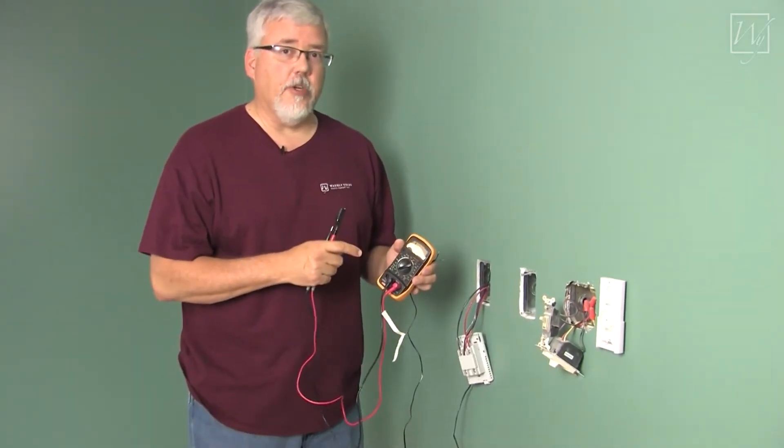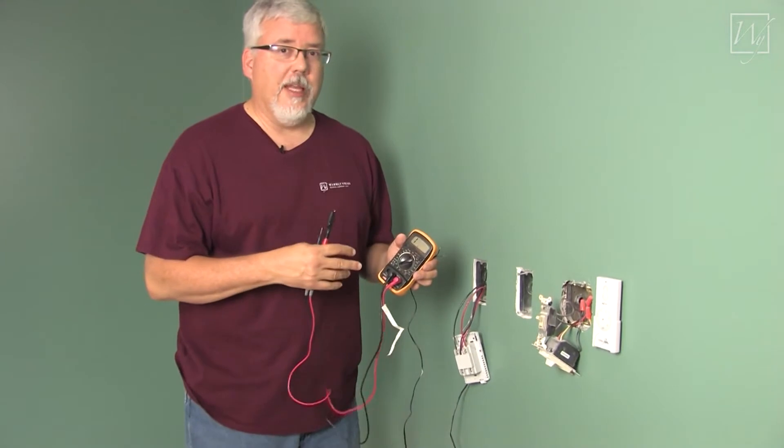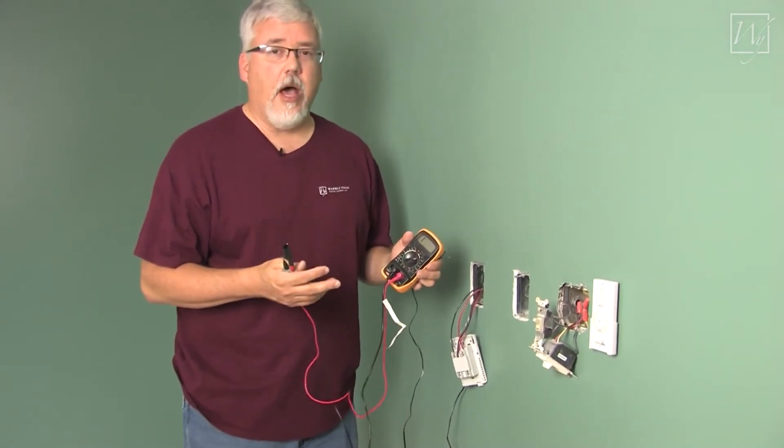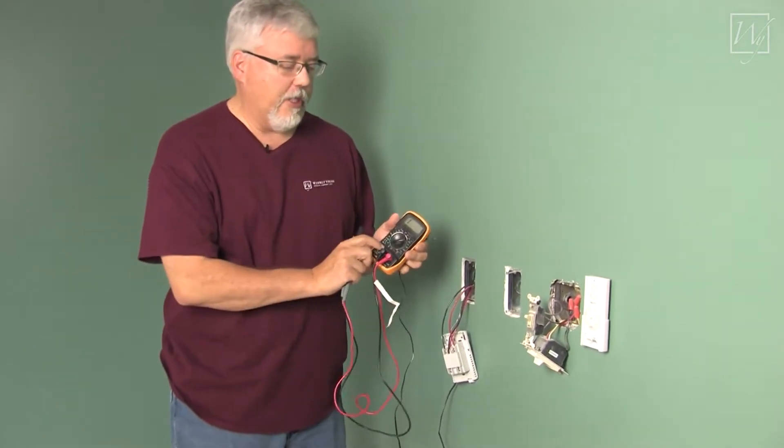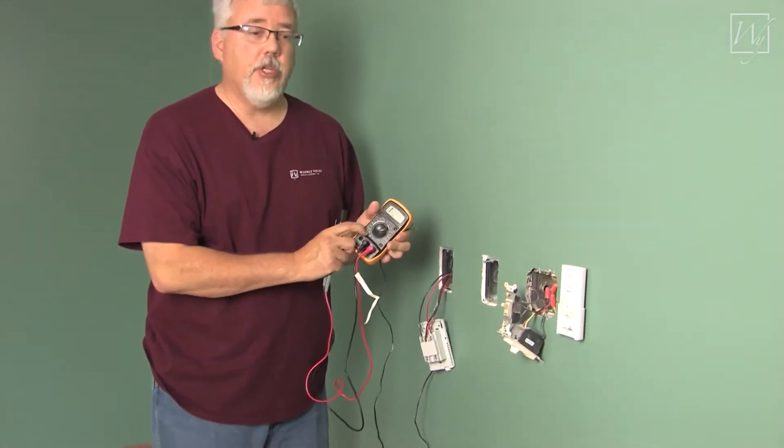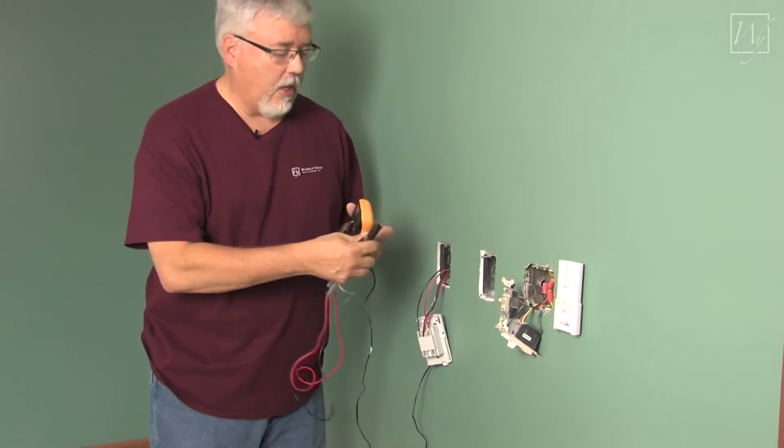Now we're going to take our thermostat sensor and test it to make sure it's good. It's going to read anywhere between 8,000 to 18,000, somewhere in there, just depending on the temperature of the room itself. We need to set to the 20k range, and that's where we're going to make our readings.